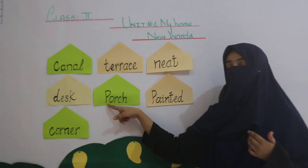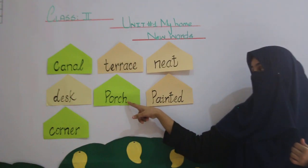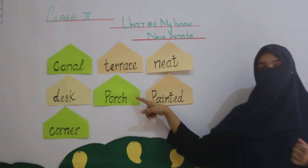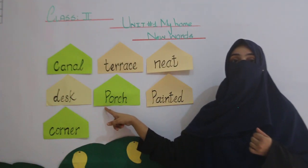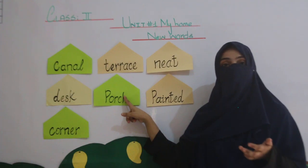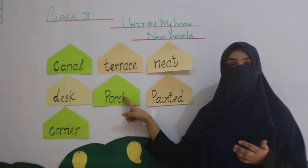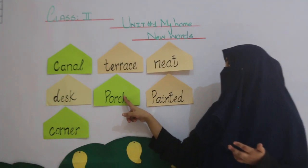Number five word is Porch. P-O-R-C-H, Porch. And the meaning — Porch is a place where we keep cars. Jahan pe gaariyan khari rukki jaati hain.